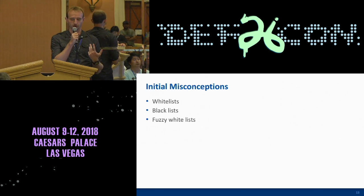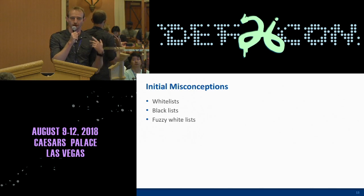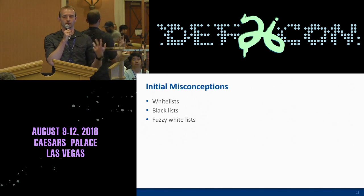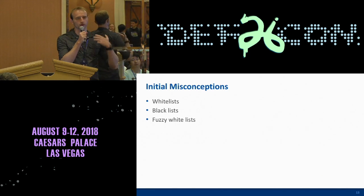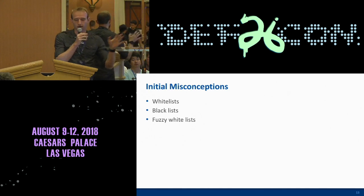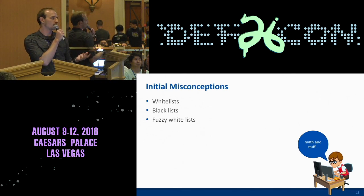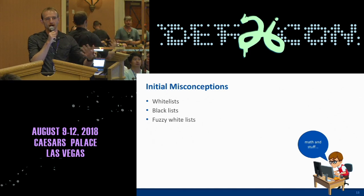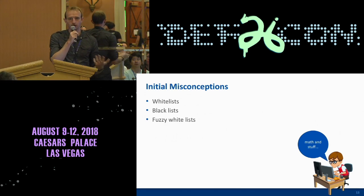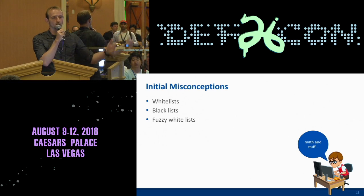Some other things we've added to help ML are whitelists for critical system files you might not want to false-positive on, like Explorer.exe; blacklists for things you just know are malware; and what I'm calling fuzzy whitelists — a reputation system where if we've seen a file on a lot of different computers many times, we make the assumption it's probably not malicious. When people asked why machine learning can't do all this, basically — a neural network has a certain capacity to learn patterns based on its layers and neurons, and there's no reason to waste that capacity trying to learn patterns you could handle with dead-simple whitelists and blacklists.